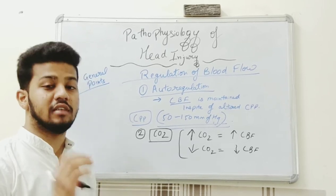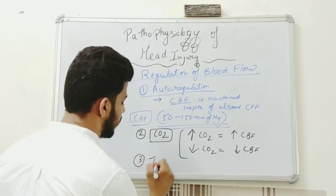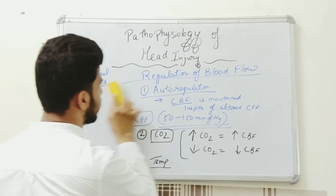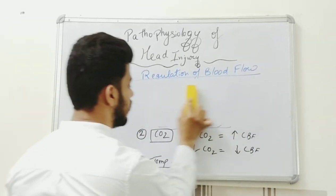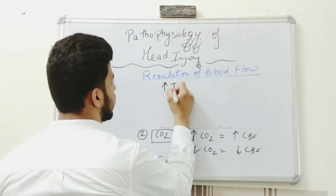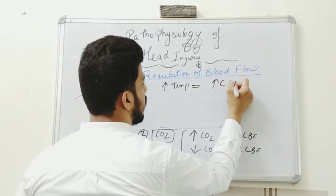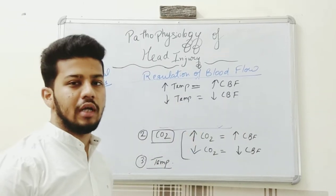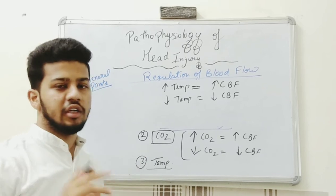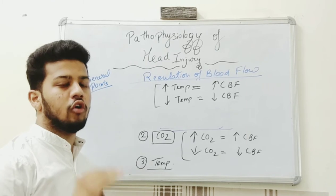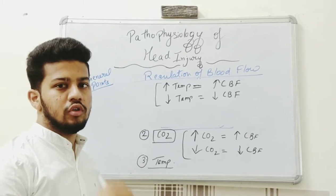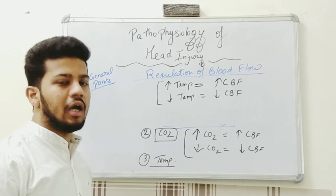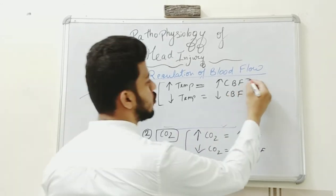The third factor is temperature. Increasing temperature causes increased cerebral blood flow, and decreasing temperature causes decreased cerebral blood flow. Surgeons utilize this property in neurosurgery: by decreasing temperature or causing hypothermia, they decrease cerebral blood flow so that metabolism and intracranial tension are reduced, preventing hemorrhage during head surgery.